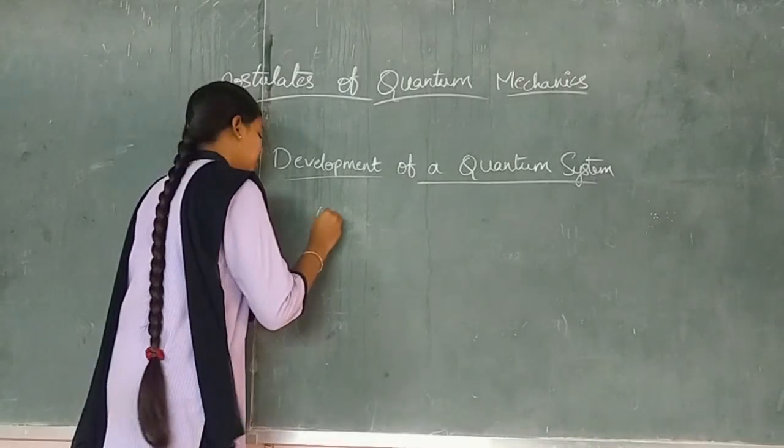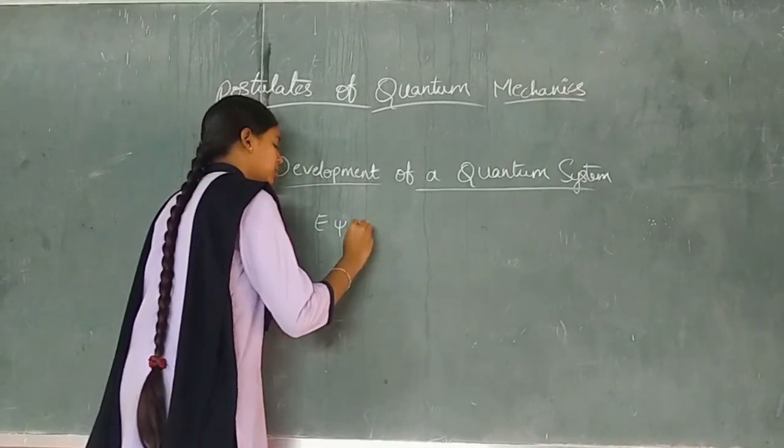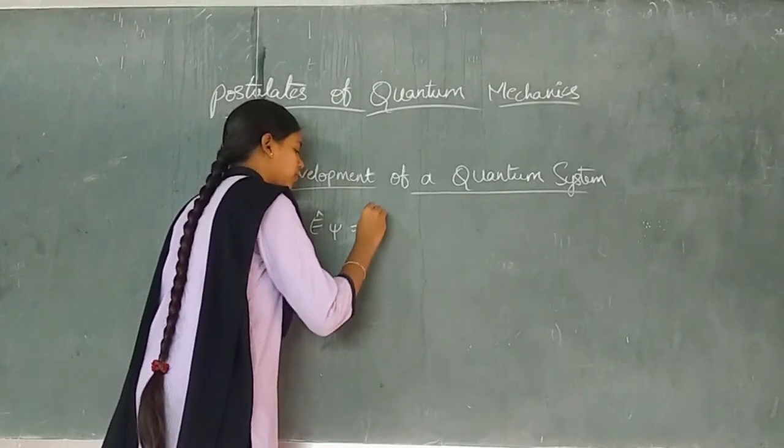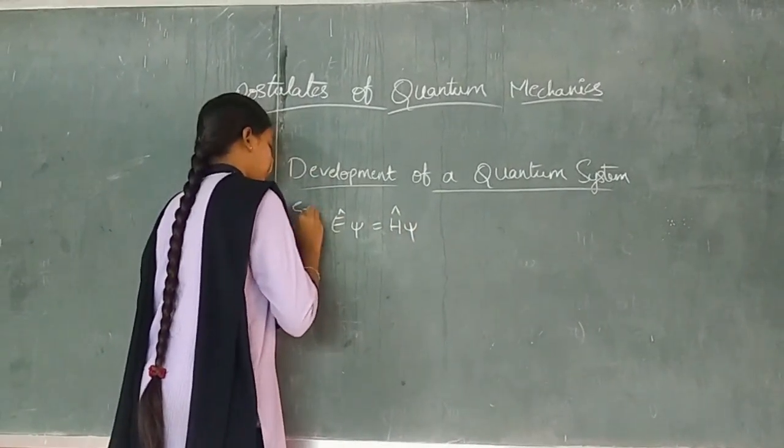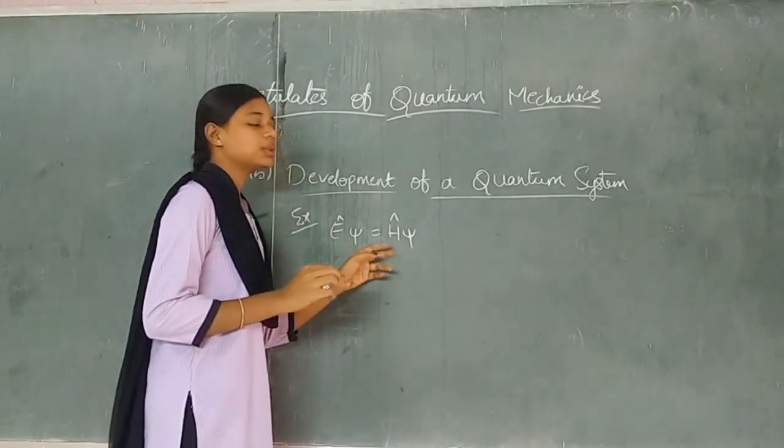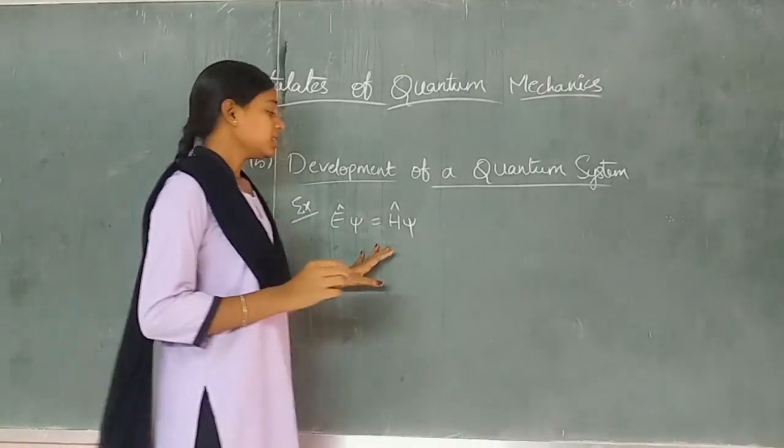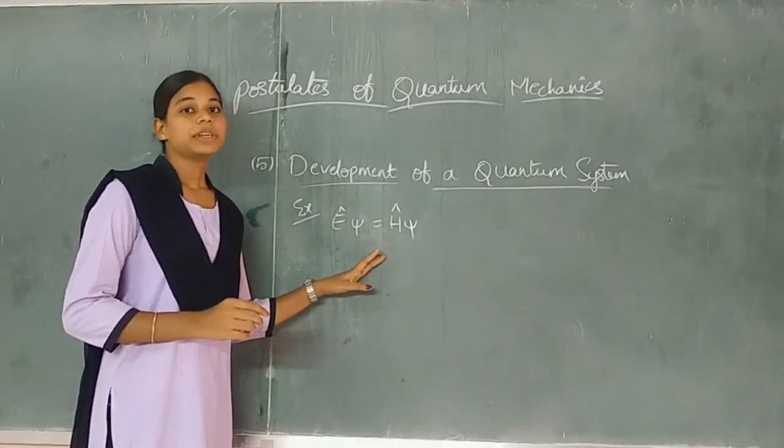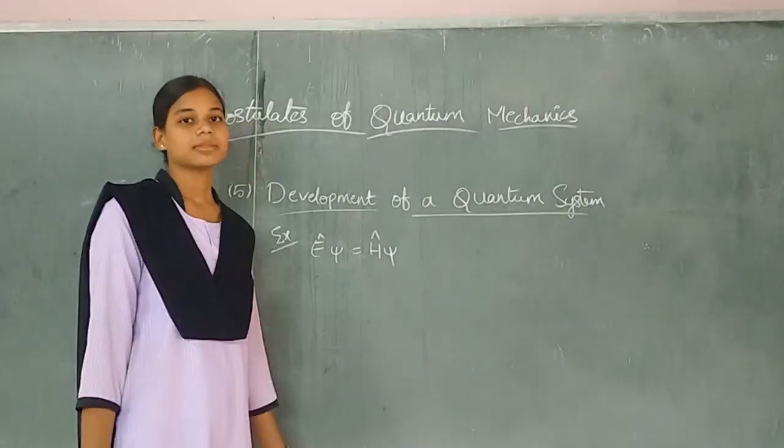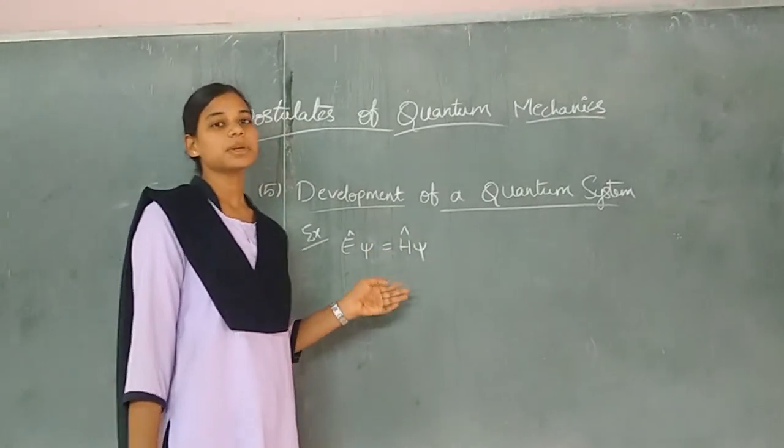Example. E psi equals H psi. This is the time-dependent wave equation. These five postulates are quantum postulates.